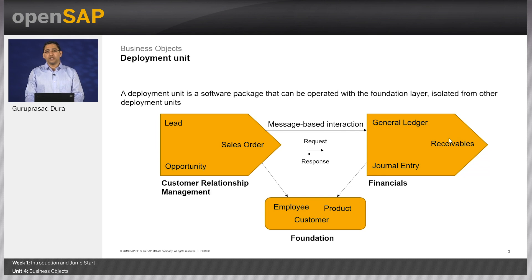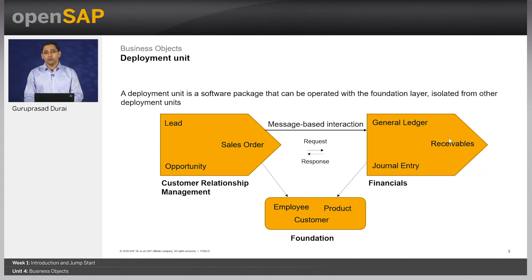Here as an example, the customer relationship management sends a request to the financials deployment unit, and in turn you get a response back from the financials deployment unit to CRM. For instance, to create a sales order in CRM, a message is sent to the supply chain management deployment unit. The order gets executed, and when an invoice is created, a message is sent from CRM to financials for invoice processing. Note that when we create a solution, a deployment unit is specified by default, and any business objects created in that solution reside in that deployment unit. If you wish to change the deployment unit of a business object, you can use the annotation deployment unit and specify the deployment unit name.